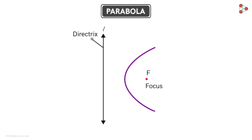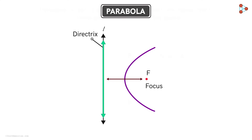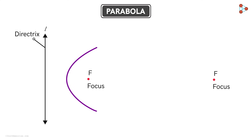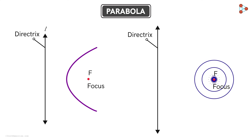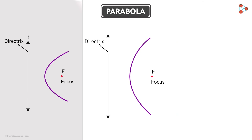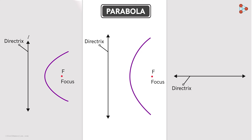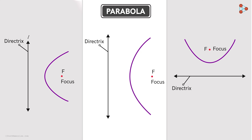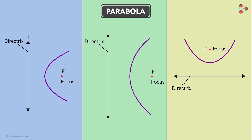For example, if we increase the distance between the focus and the directrix, and take this point as the focus and this line as the directrix, this will be our parabola. Now say we take this horizontal line as our directrix and this point as our focus — this will be the parabola here. So we see that depending on the focus and the directrix, we get different parabolas.